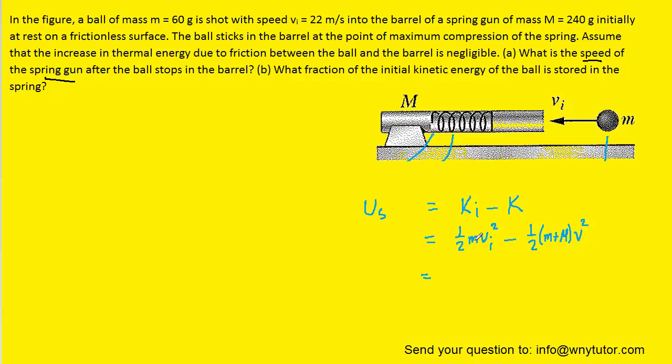We can go ahead and plug in the known values for the mass of the ball, the initial speed of the ball, and then the mass of the spring gun as well as its final speed on the right side. And when we crunch that all down we should get 11.616 joules for the elastic potential energy. So again that's the energy that's stored in the spring.